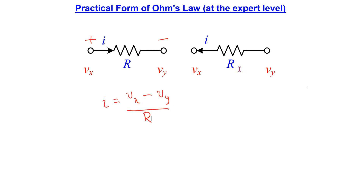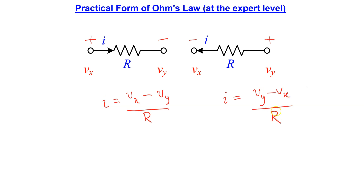Similarly, if the current direction is assumed to be from left to right, we can assign reference polarities as shown, and this current I is given by Vy minus Vx over R. This Ohm's law principle, which is employed to write these two expressions, is frequently used in advanced circuit analysis.